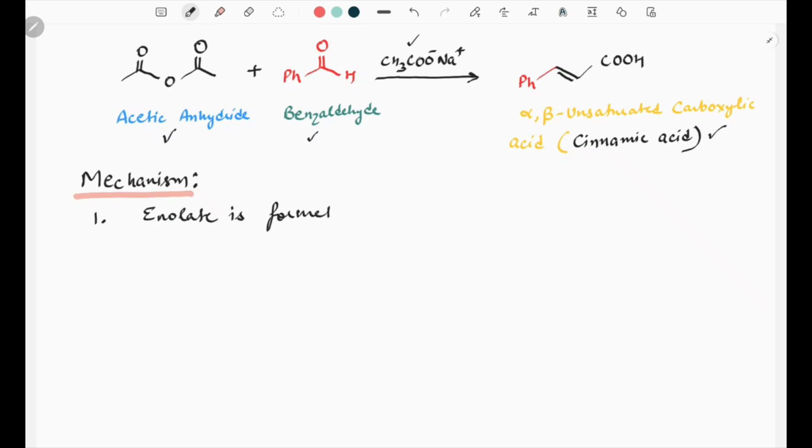What happens in this reaction is at first, enolate is formed from anhydride molecule. Let's see how enolate is formed. This is our anhydride, CH2H. This alpha proton is easily abstracted by the base, and as a result, negative charge goes to the carbon and what we get is an enolate.